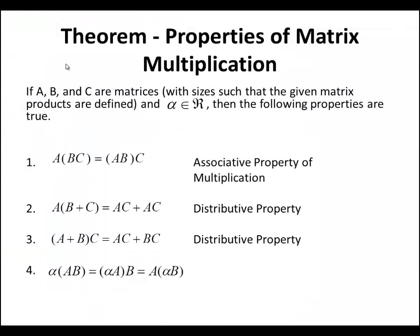Theorem: Properties of Matrix Multiplication. If A, B, and C are matrices with sizes such that the given matrix products are defined, and alpha is a scalar, then the following properties are true: the associative property of multiplication, left distributivity, right distributivity, and alpha*(A*B) equals (alpha*A)*B equals A*(alpha*B), meaning alpha can go in any order without changing the product. We will not prove any of these properties, but we will discuss them more in class.